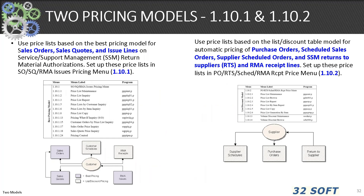There are basically two models for pricing in QAD. The first is 1.10.1 for customers and 1.10.2 for suppliers. You can use price lists for sales orders, sales quotes, and issue lines with the 1.10.1 menu. You can also use price lists based on list or discount table model for automatic pricing of purchase orders, scheduled sales orders, supplier orders, and some service and support functionality in terms of RMAs and RTSs, set up in 1.10.2.